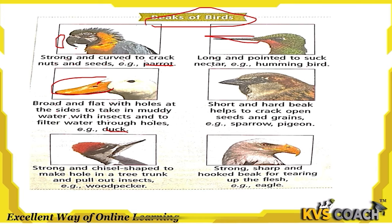The fourth type is a short and hard beak, present in sparrows and pigeons, which helps to crack open seeds and grains. The woodpecker has a strong, chisel-shaped beak used to make holes in tree trunks and pull out insects. The eagle has a strong, sharp and hooked beak for tearing up flesh.